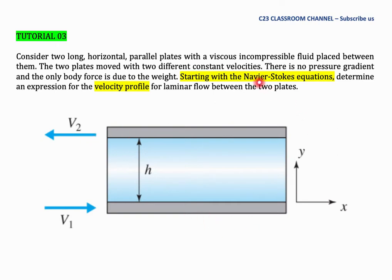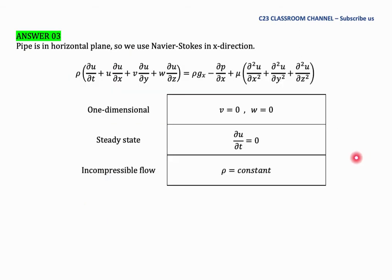Starting with the Navier-Stokes equation, as mentioned in the question, we need to determine the velocity profile for laminar flow between the two plates. Since the motion is focused in the x-direction, we use the Navier-Stokes equation in the x-direction.